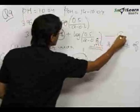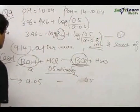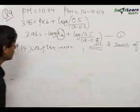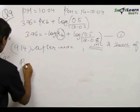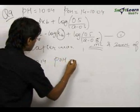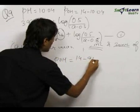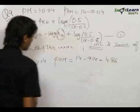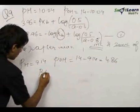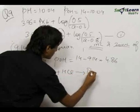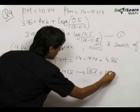This is our first reaction and for our second reaction, we have over here the pH is given to be equal to 9.14. So the POH will be equal to 14 minus 9.14 which is equal to 4.86. The reaction goes as follows, BOH plus HCl becomes BCL plus H2O.